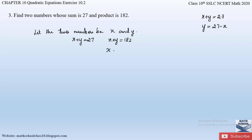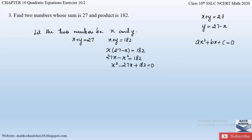Substituting y equals 27 minus x, we get x times (27 minus x) equals 182. Expanding the bracket: 27x minus x squared equals 182. Rearranging by sending both terms to the right-hand side gives x squared minus 27x plus 182 equals 0. This is a quadratic equation of the form ax squared plus bx plus c equals 0. Comparing, the coefficient a equals 1, b equals minus 27, and c equals 182.